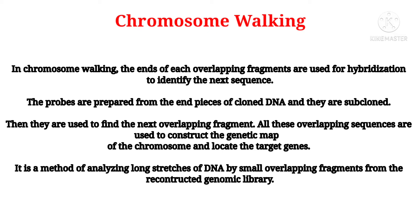With the use of plasmid, phage or cosmid-based genomic libraries, such long DNA can only be obtained as a series of overlapping fragments. Each fragment that we isolate will be utilized as a probe to identify the next. In this chromosomal walking technique, we literally walk along the chromosome from a known side to an unknown side. This process is carried out to reach a particular gene, and the probes used for stepping from one genomic clone to the next must be of a unique sequence.